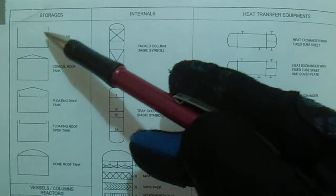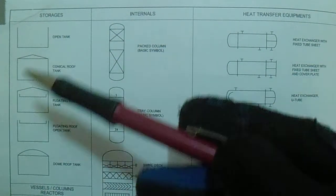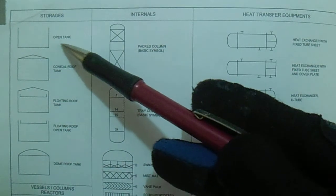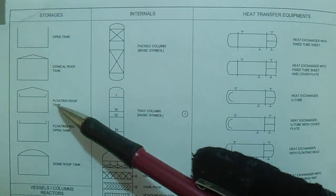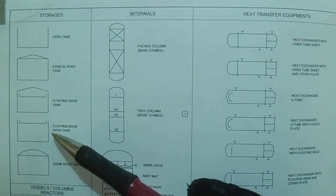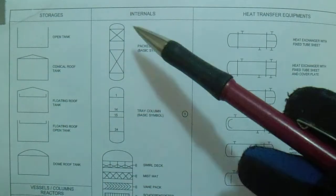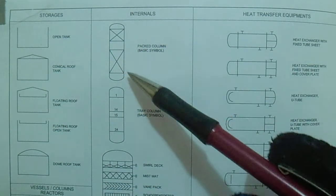First, storage — we have five storage symbols: open tank, conical roof, floating roof, floating roof open tank, and dome roof tank.